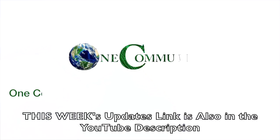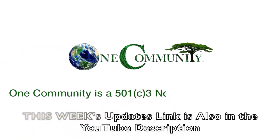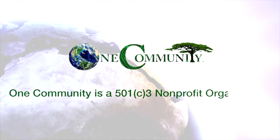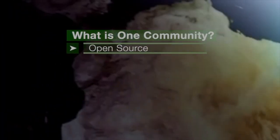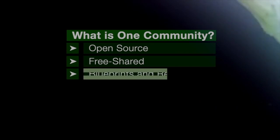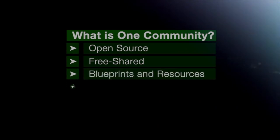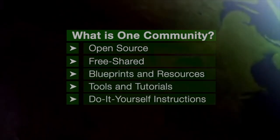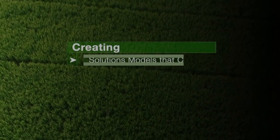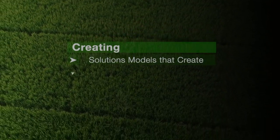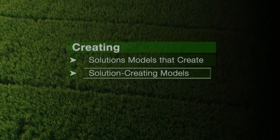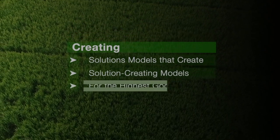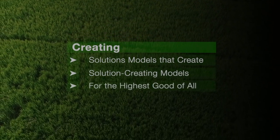One Community is a 501c3 non-profit organization. We are creating open source and free shared blueprints and resources, tools and tutorials, and do-it-yourself instructions for highest good living — creating solution models that create additional solution-creating models in the service of all life on this planet.